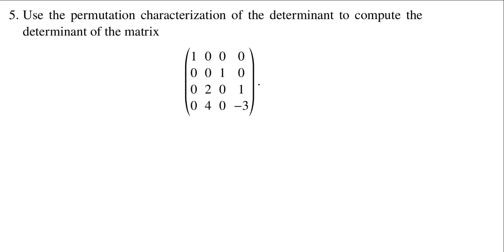Which means if we want to get something non-zero, we have to choose the 1 from the first row and the 1 from the second row — all the other numbers are 0. Now when we get into the third and fourth rows, there are some options. I could choose this 2, and then I would have to choose this negative 3. Alternatively, I could choose this 1, and then I would have to choose this 4 from the bottom row. Those are the only possible ways of getting something non-zero.